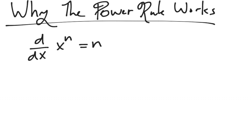we simply bring down the power in front and then multiply times x and then we subtract the power. So you think about bringing the power down in front and then subtracting 1. That's the power rule. Pretty simple to use.